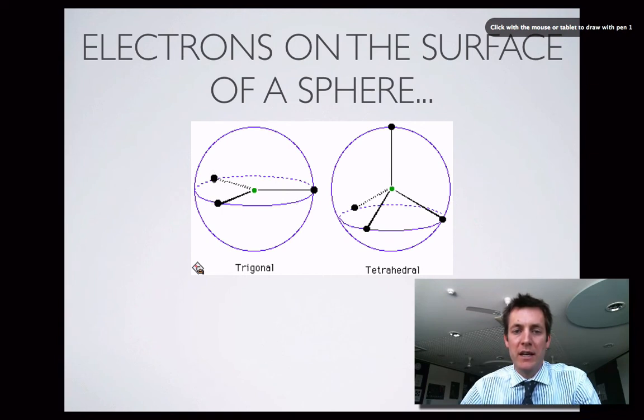Here we've got three electron pairs around the central atom, and because they're repelling each other, they'll get as far away from one another as possible. And it can be shown, but by people with much greater geometric skill than me, that the way that three electron pairs would get as far apart from one another as possible on the surface of a sphere would be to adopt this trigonal arrangement.